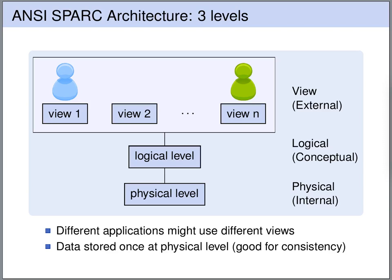The ANSI SPARC architecture defines three levels. At the bottom we have the physical or internal level — this is where the data is stored on the disks. Then we have the logical level, also called the conceptual level — this is a simplified view on the physical data. And then we have the external or view level — these are the different views of users or applications on the logical level. By using these different views, we avoid that data at the physical level has to be duplicated.